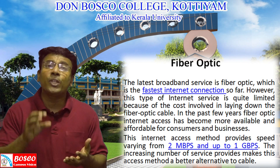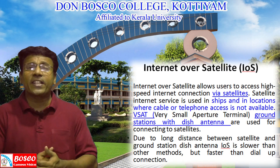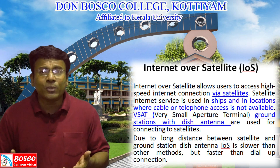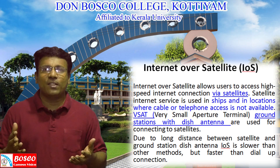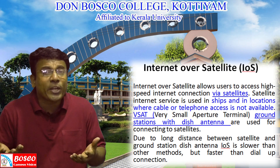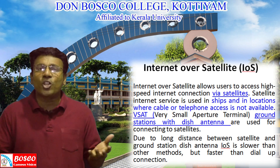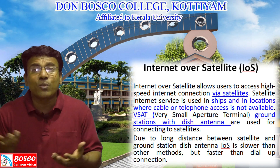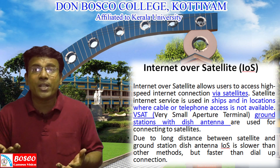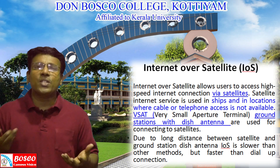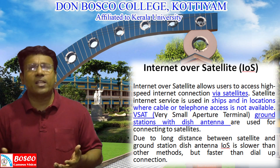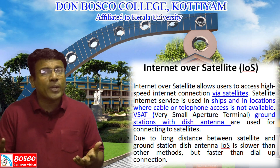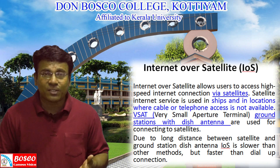The next way to access the internet is Internet over Satellite, or IOS. IOS allows users to access high-speed internet using satellites. Satellite internet service is used in ships or in locations where cable or telephone access is not possible, such as mountainous areas. IOS uses VSAT — Very Small Aperture Terminal — ground stations with dish antennas to connect to satellites. Due to the long distance between satellites and ground stations, IOS is slower than other methods but faster than dial-up.